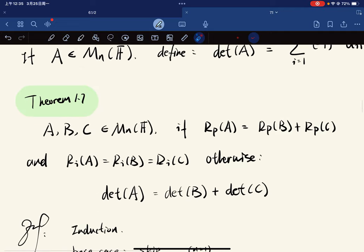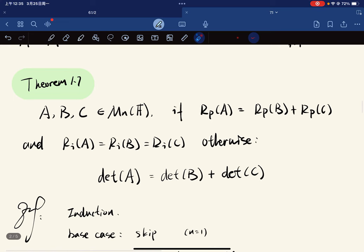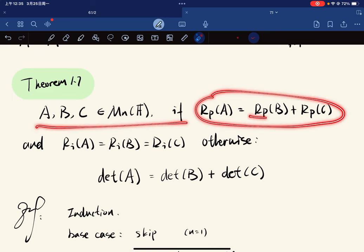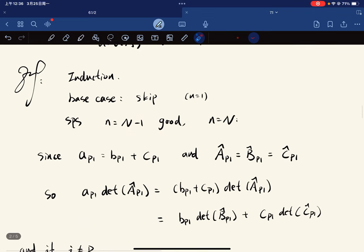Alright, so the theorems. If a row, if one of the rows is equal to the sum of the other two rows and others are the same, then we have this. So to prove that by induction, the base case is skipped. So suppose we have this is true, suppose n equals n.